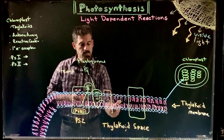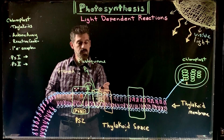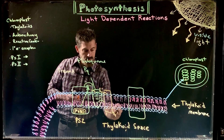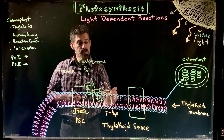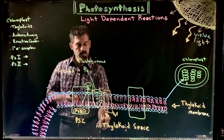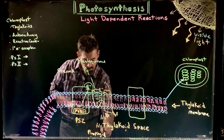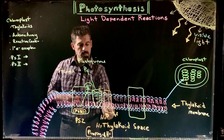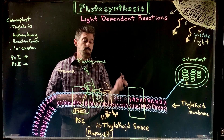This next molecule is like one of the pumps — the electrons get passed on to it. It's called the B6f complex, and it is an active transport pump. What it does is pump protons, or hydrogen ions, into the thylakoid space. Just like in the mitochondria, the energy of the electrons powers this active transport pump.